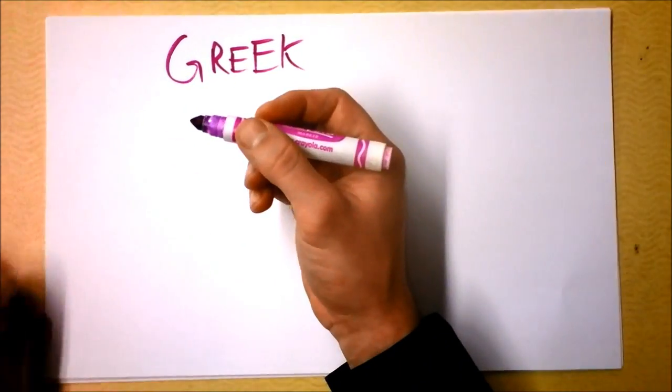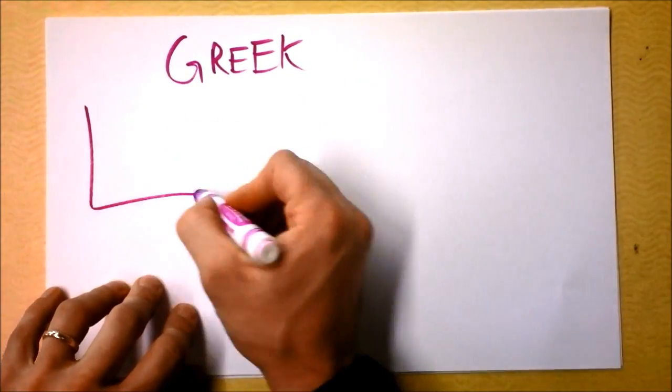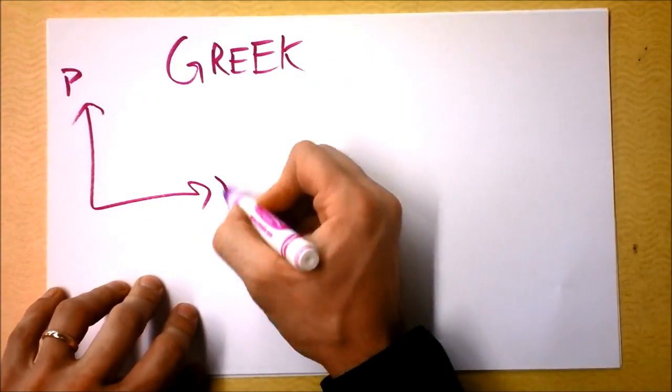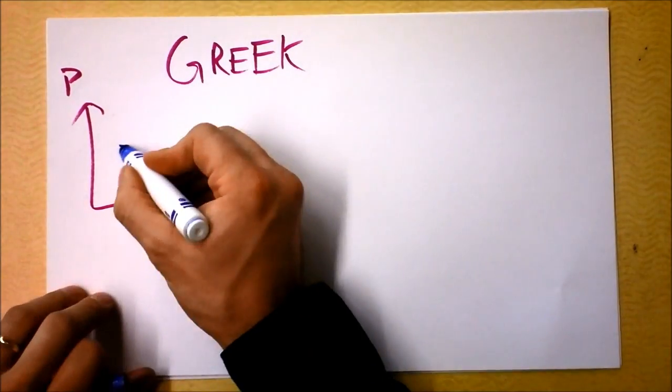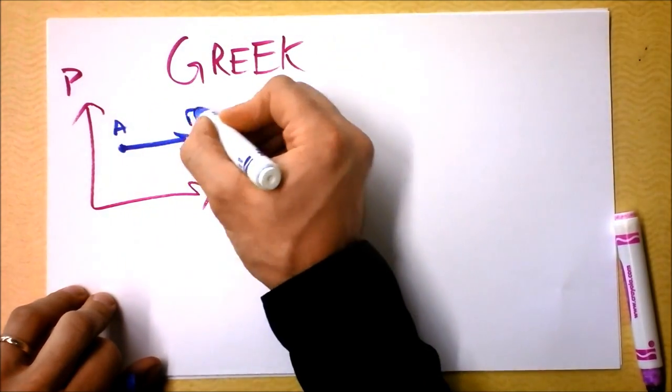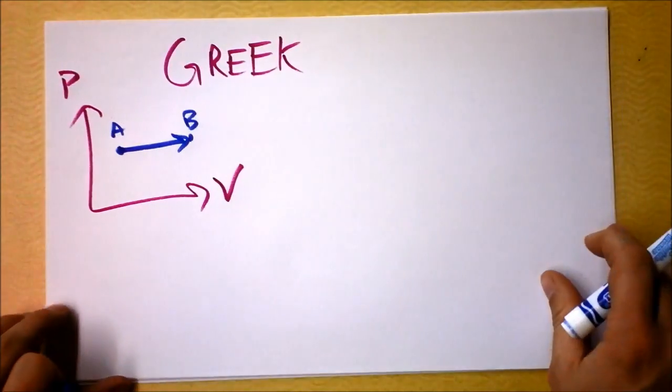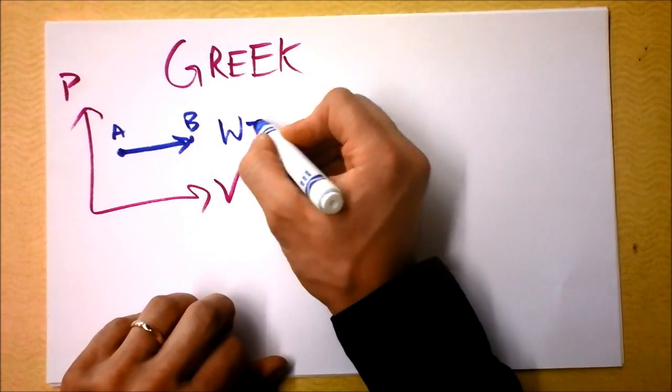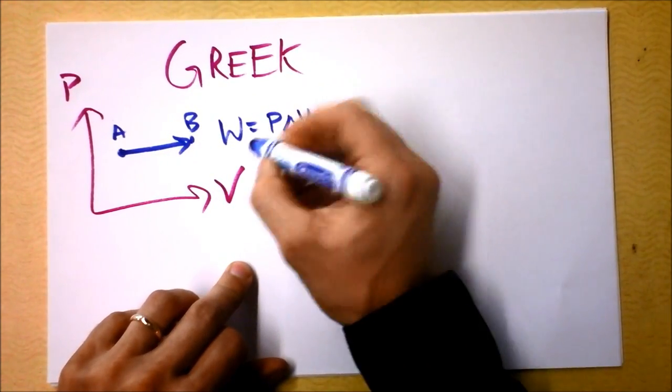We have just discussed constant pressure process, and that's where the pressure volume graph goes like this. It's like nope, not changing pressure, going from state A to state B, all at the same pressure, and we found that the work done in that type of graph was simply the pressure times the change in volume.